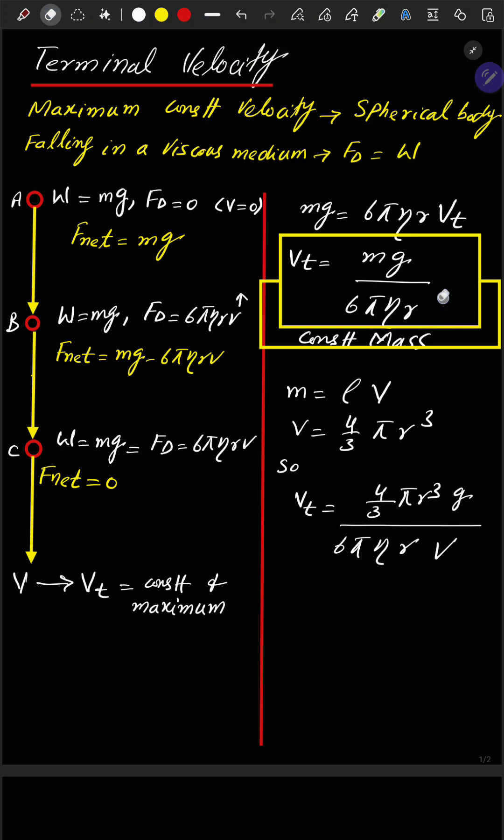This equation is only valid for constant mass with different radii. If we further explore, mass can be written as density times volume: m = ρV. The volume of a sphere is (4/3)πr³. Putting this value of volume in the equation, we get the next form.